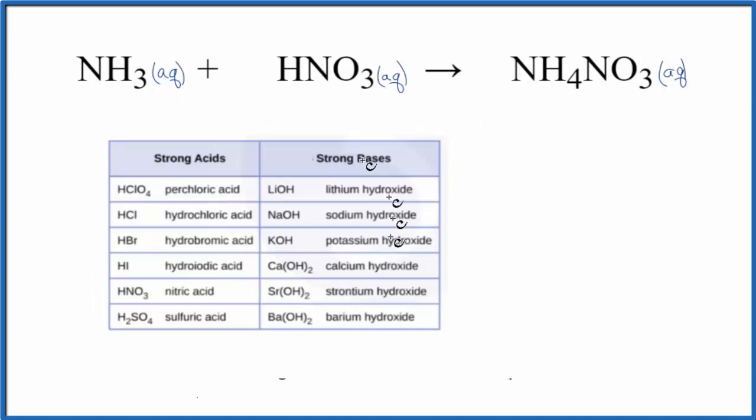So we look on our list for strong acids and strong bases, and we don't find ammonia. It is a base, but it's a weak base. Because of that, it's a weak electrolyte. We're not going to split it apart.